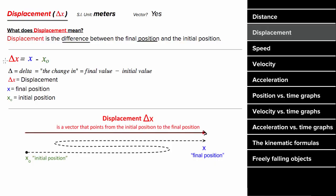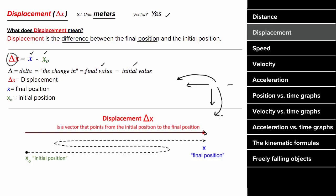A formula for displacement can be thought of as the final position minus the initial position. This delta represents 'the change in,' which means final minus initial. The SI units for displacement are meters. It's a vector, which means if the displacement is leftward or downward, the displacement can be negative. If you end up further left from where you started, your horizontal displacement is negative, and if you end up further down, your vertical displacement is negative.